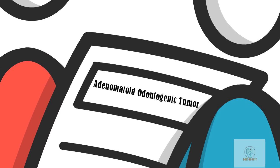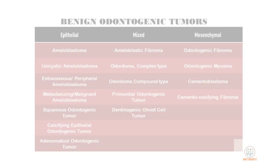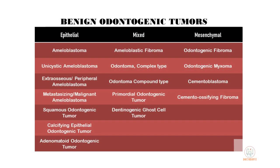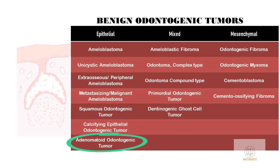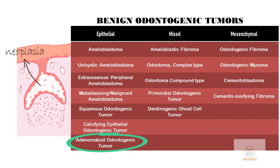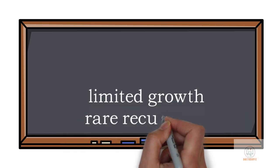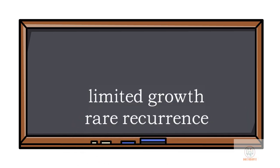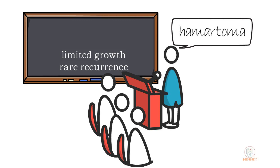It was Philipson and Birn who proposed its current name. In the classification of benign odontogenic tumors, AOT is classified in the epithelial group — that is, only the epithelial cells are neoplastic, not the connective tissue cells. Though due to its limited growth and rare recurrence, some researchers consider it as a hamartoma.